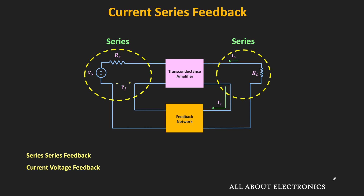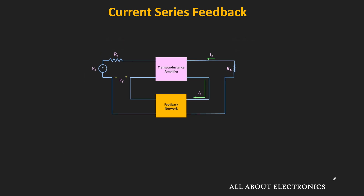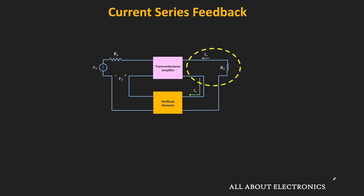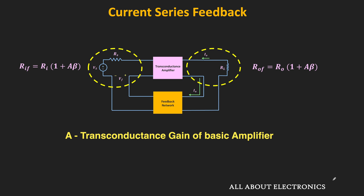Sometimes it is also known as the current-voltage feedback amplifier, because on the output side the current signal is sampled, while on the input side the feedback voltage is mixed with the input signal. In this feedback topology, since we have a series connection on the output side, the output impedance increases. Similarly on the input side, since we have a series connection, the input impedance also increases by the factor of 1 plus Aβ, where A is the transconductance gain of the basic amplifier and β is the feedback factor.